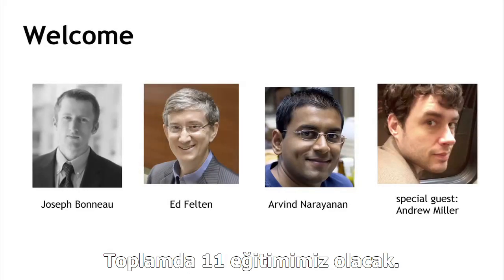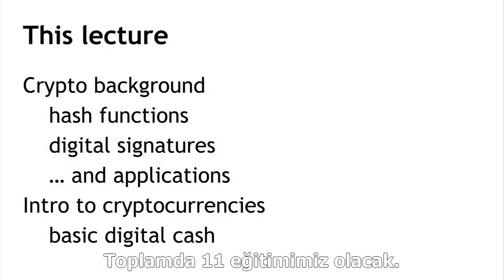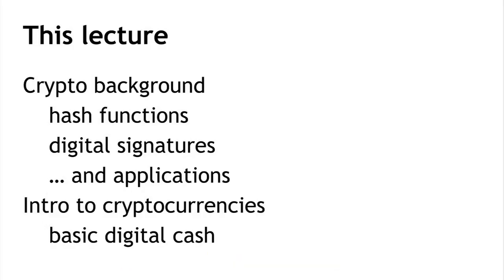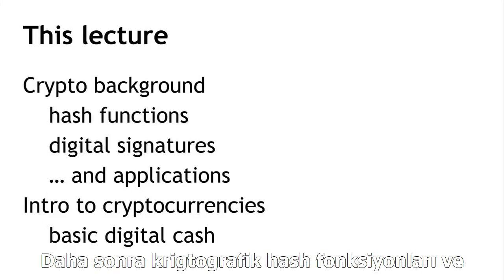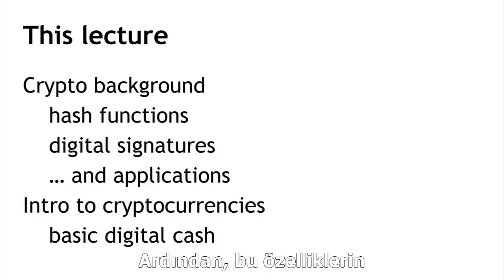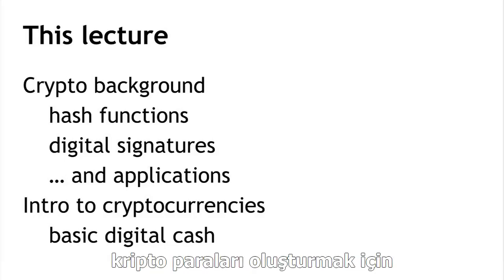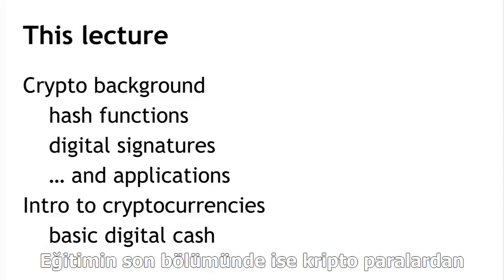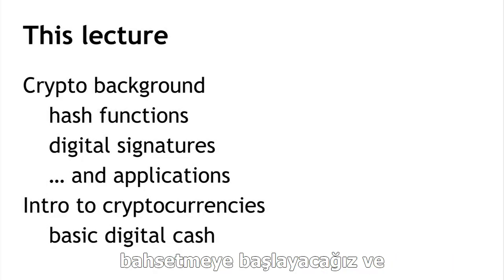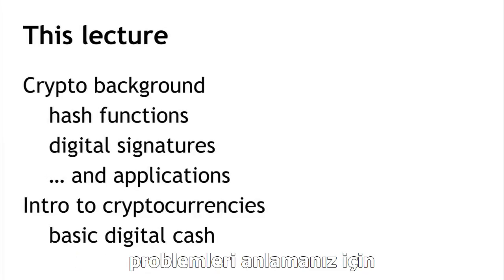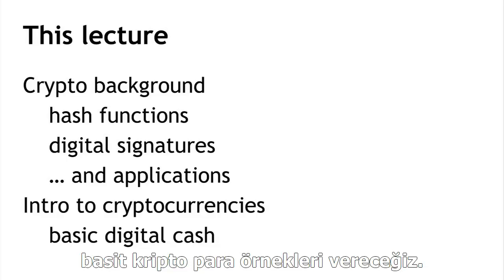There will be 11 lectures in total. In this lecture, number one, we're going to do two things. First, we'll introduce some cryptographic primitives that turn out to be necessary for talking about cryptocurrencies — in particular, cryptographic hashes and digital signatures — and we'll talk about some of the ways in which those are used to build cryptocurrencies. Then at the end of the lecture, we'll start talking about cryptocurrencies, and I'll give some examples of simple cryptocurrencies that illustrate some of the design challenges that we need to deal with.